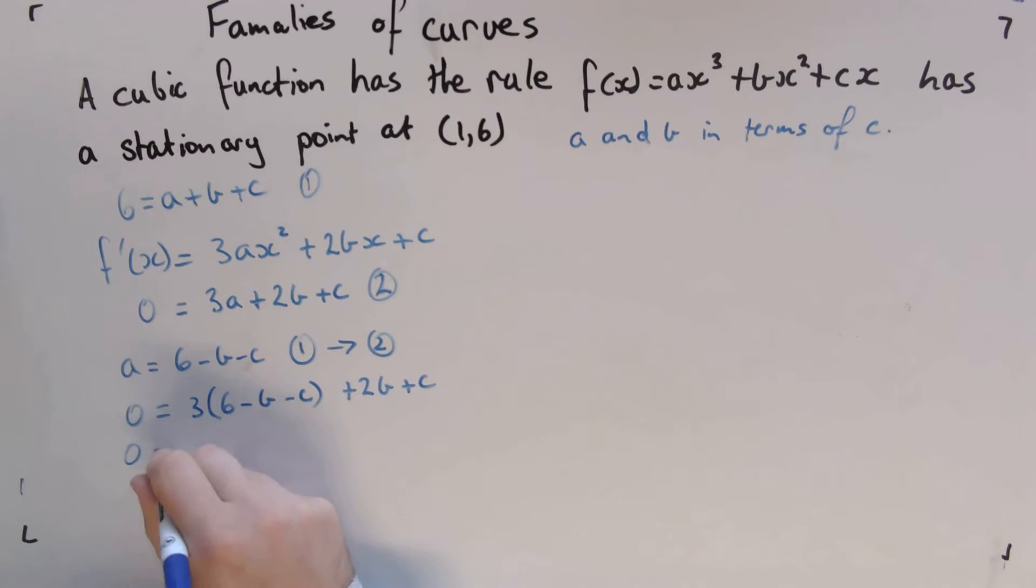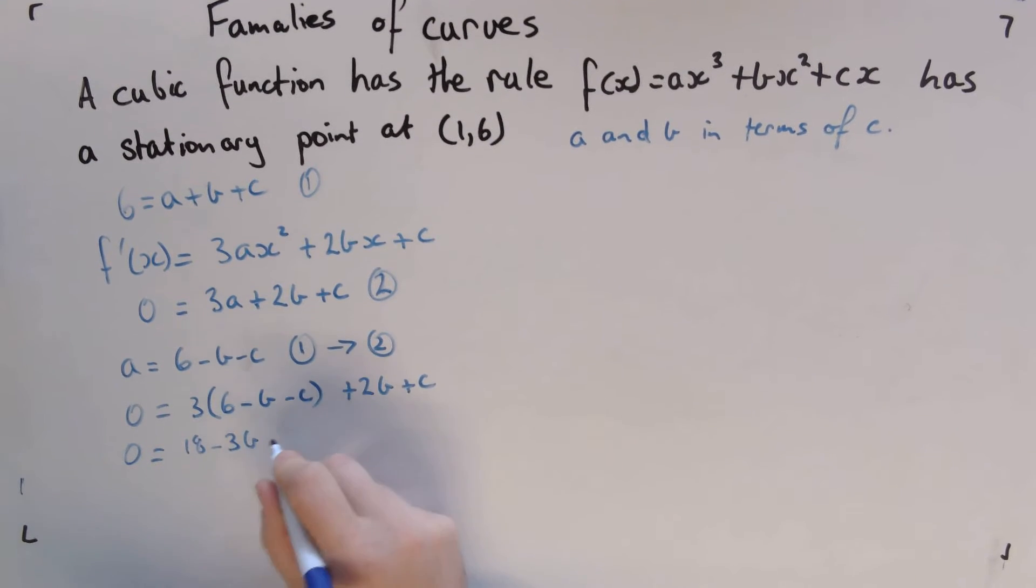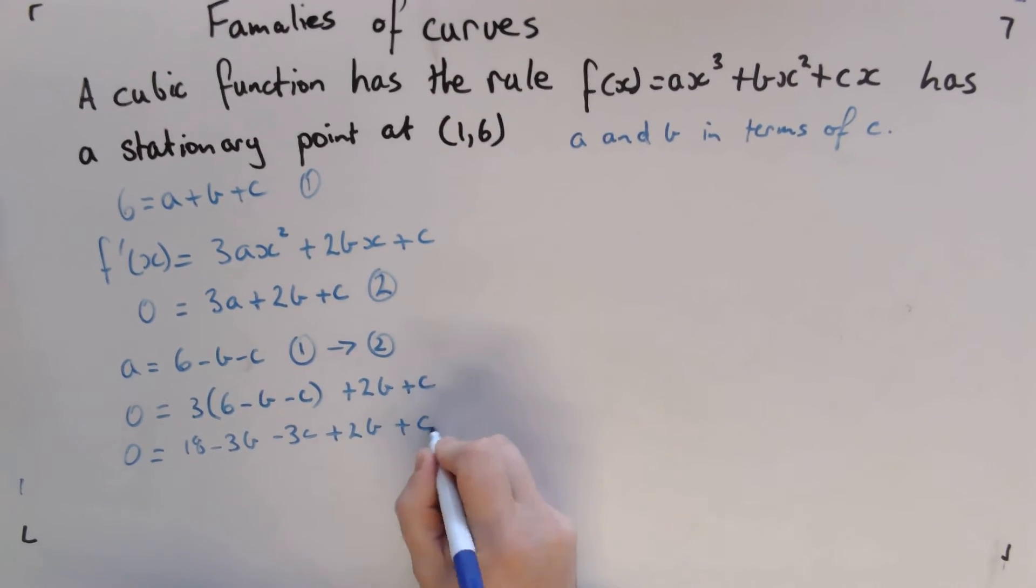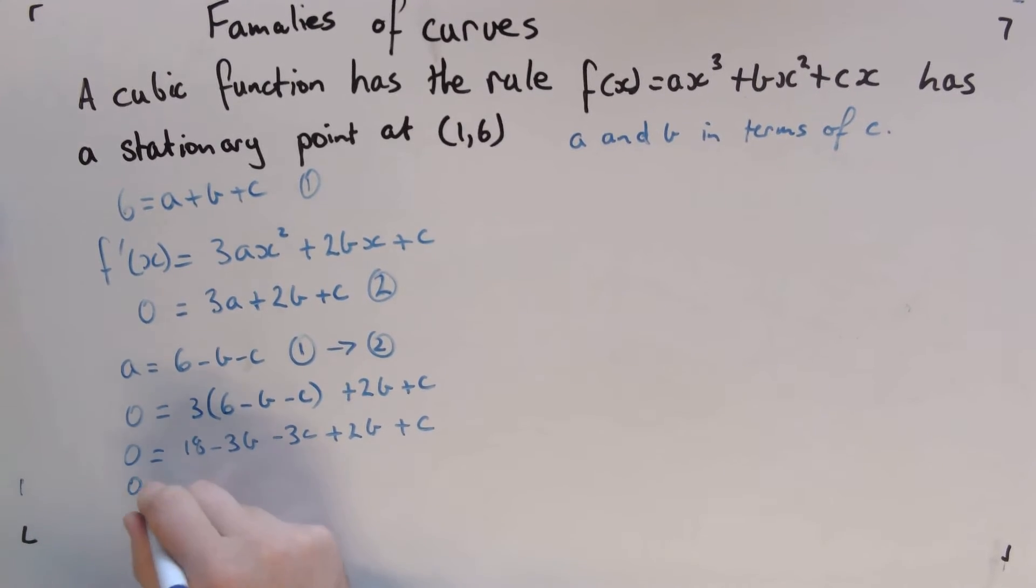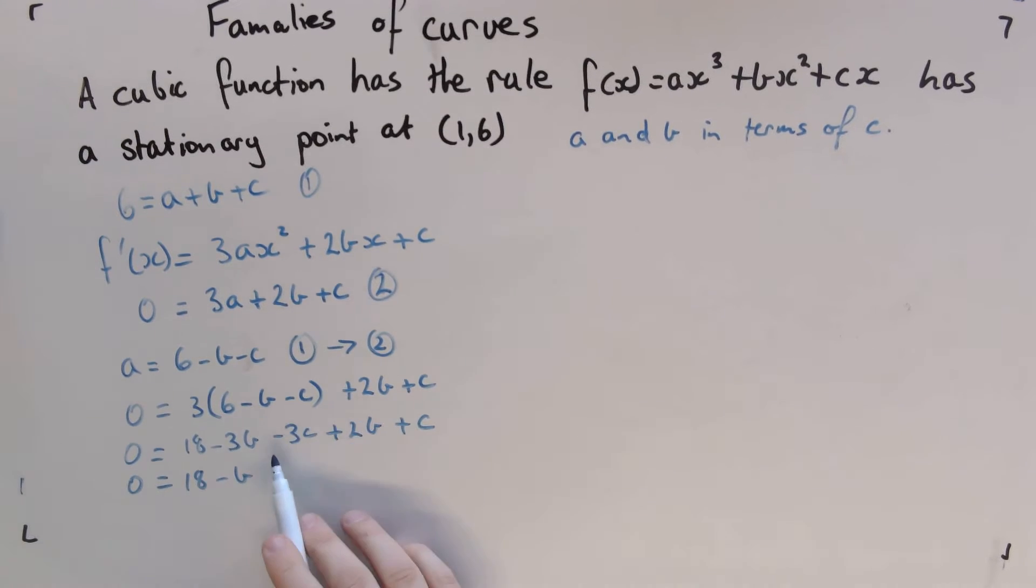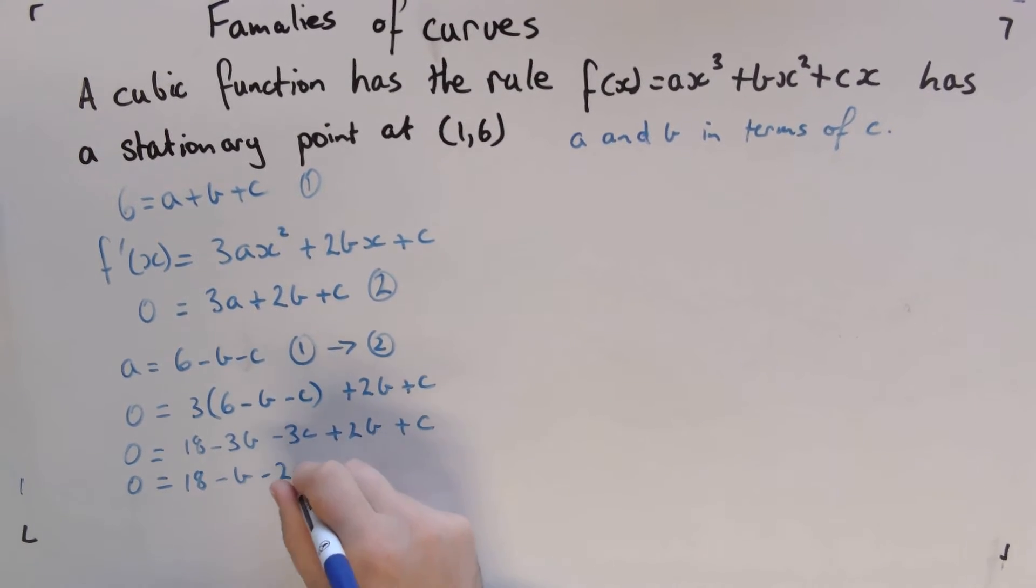So we're going to get 0 = 18 - 3b - 3c + 2b + c. So we're going to get 0 = 18, we've got -3b + 2b is going to be -b, we've got -3c + c is -2c.